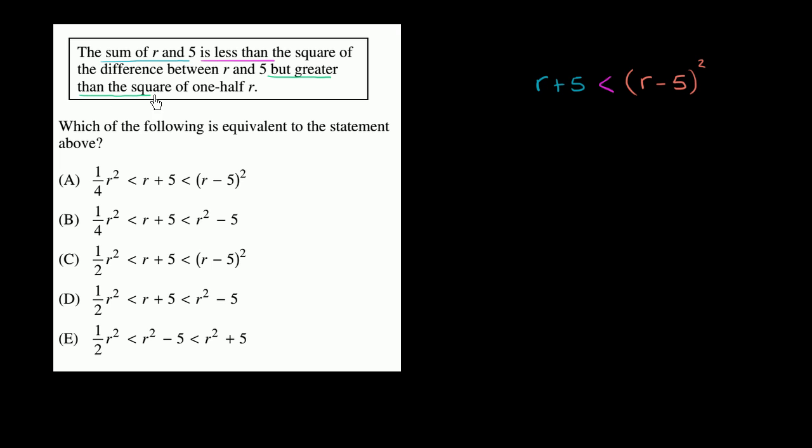So they're saying r plus 5 is greater than the square of one-half r. Or we could say that the square of one-half r, or r over 2, is less than r plus 5.